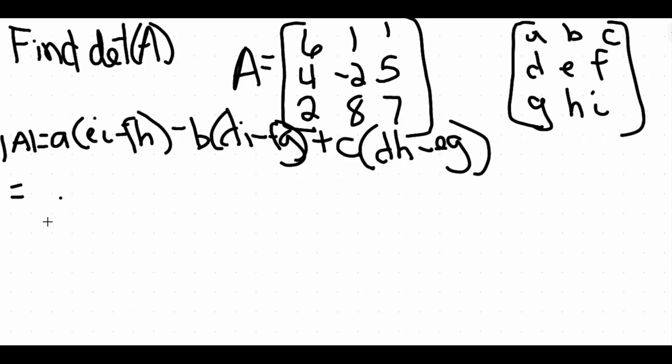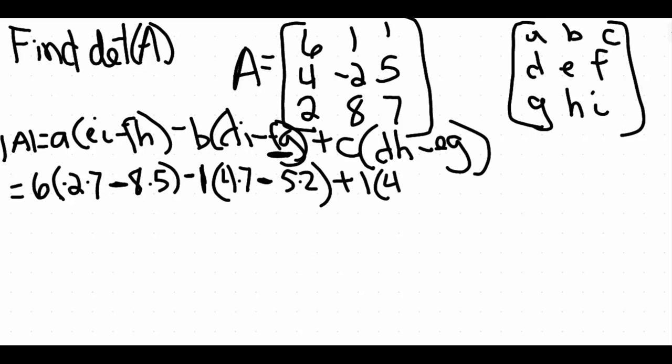So we take A, which is 6, times EI minus FH, that's (negative 2 times 7) minus (8 times 5), minus B, which is 1, times DI minus FG, that's (4 times 7) minus (5 times 2), plus C, which is 1, times DH minus EG, that's (4 times 8) minus (negative 2 times 2).